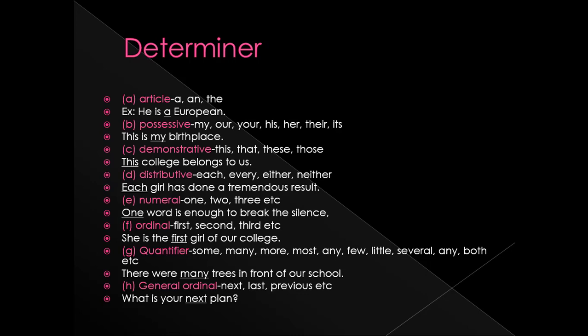The first pre-modifier type is determiner, which has eight subtypes. First is article — A, An, and The are articles, and they are also determiners. Second is possessive — words like my, our, your, his, her, their, its. For example: 'This is my birthplace.' Here 'my' is a possessive determiner modifying 'birthplace.' Third is demonstrative — this, that, these, those. For example: 'This college belongs to us.' The word 'this' modifies 'college.'